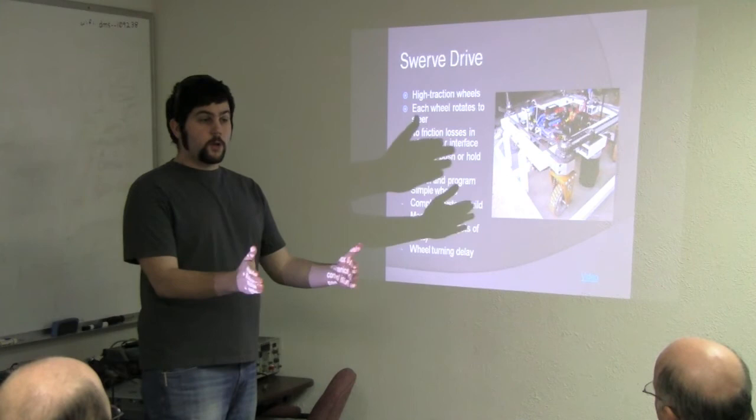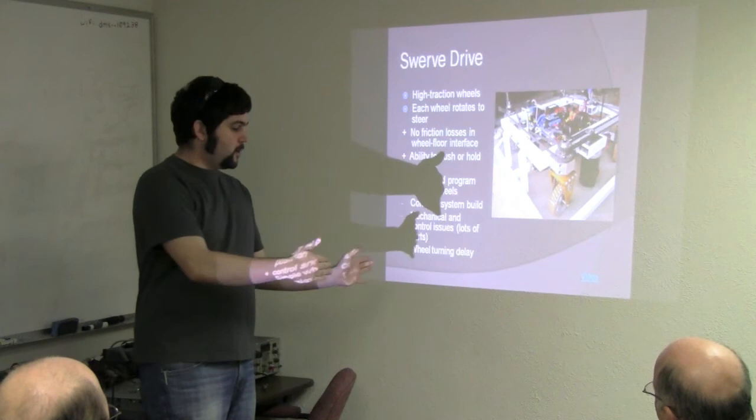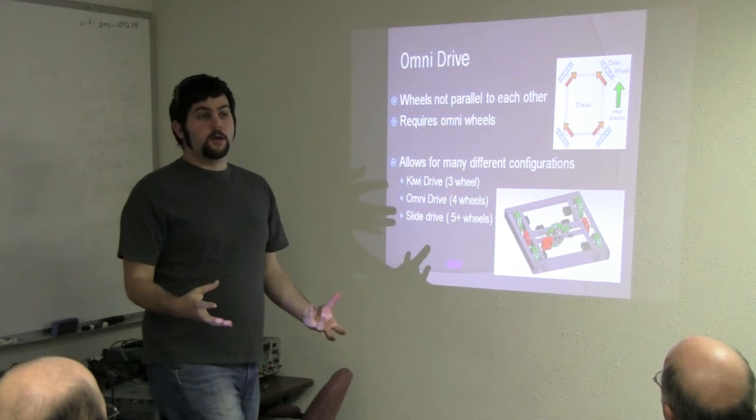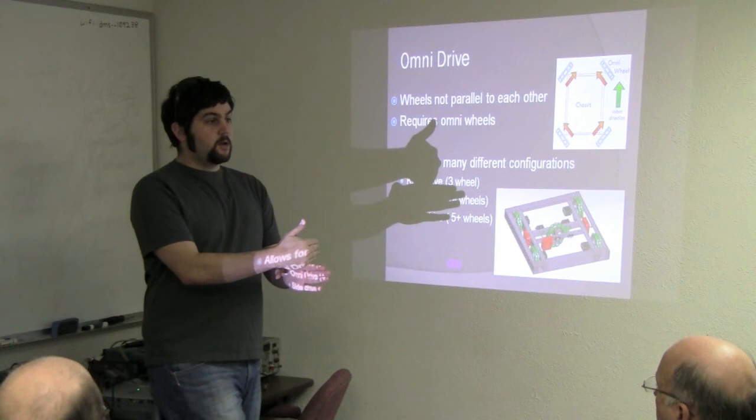Some of the issues that you end up with is also turning delay, which is one I've seen a lot. If you have feedback on your wheel positions to tell you exactly where you're going, there'll be a delay from when you say I want to go that way to when your wheels spin to go that way if you're not turning on the fly. An omni drive uses omni wheels, which are a wheel with a roller 90 degrees to the axle that goes through, and you can use these to create interesting drive characteristics.